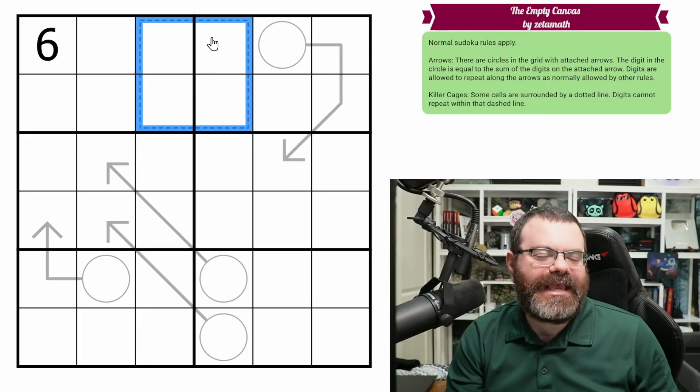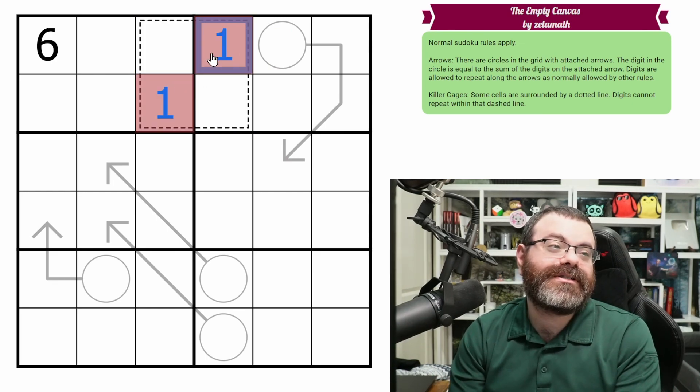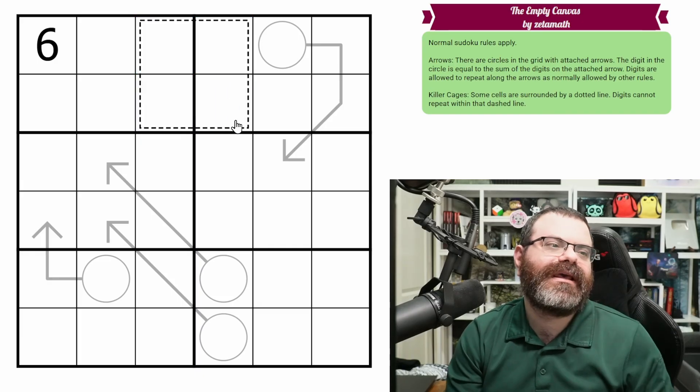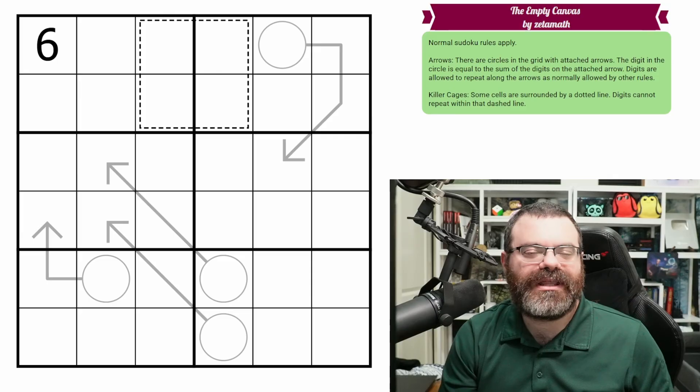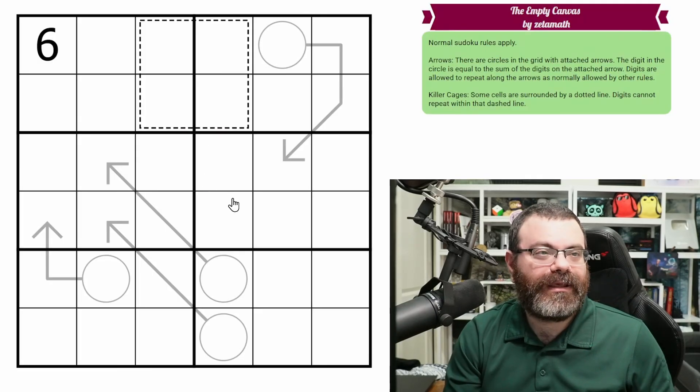In addition to that, we do have this cage here. Digits can't repeat in the cage. So normally we could put a 1 here and a 1 here. Sudoku would allow that, but we are not allowed to do that because we can't repeat within this cage. That's it. Those are the rules.